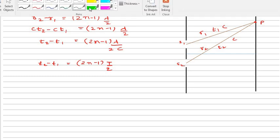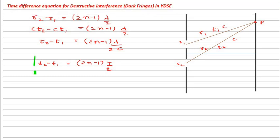People, this is the time difference equation and I would like to make a point and highlight this one. This is very important. This is the time difference equation, delta T that is equal to (2N minus 1) T by 2 is the time difference equation for dark fringes.